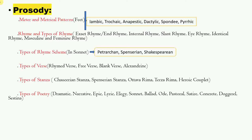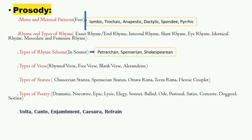We also have types of poetry: dramatic poetry, dramatic monologue, narrative, epic, lyric, elegy (studied in the Anglo-Saxon period), sonnet, ballad, ode, pastoral, satire, concrete poetry, doggerel, and sestina. Sestina is a modern, rare form. You need to clearly distinguish each — have a clear concept of what an elegy is, what a sonnet is.